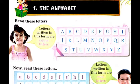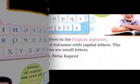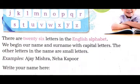Now, read these letters. a, b, c, d, e, f, g, h, i, j, k, l, m, n, o, p, q, r, s, t, u, v, w, x, y, z. Letters written in this form are small letters. इस form में जो letters लिखे जाते हैं वे small letters कहलाते हैं.